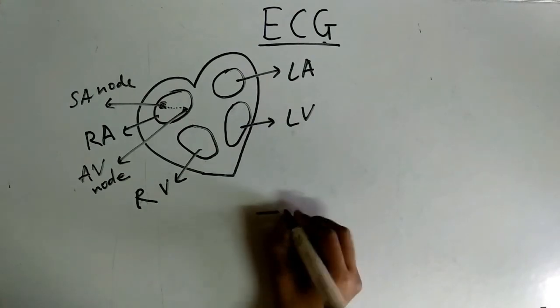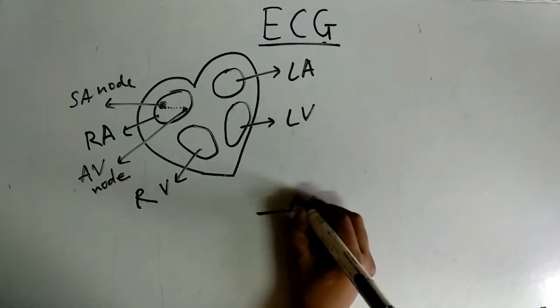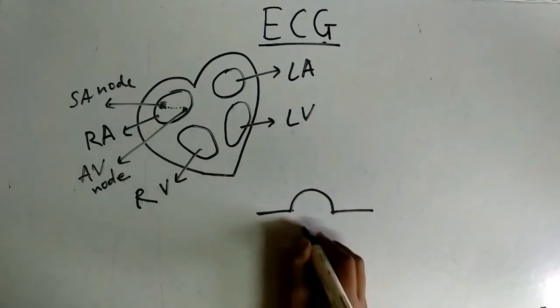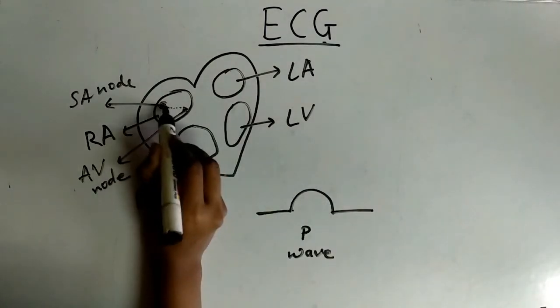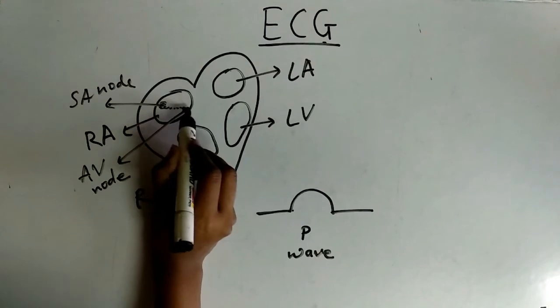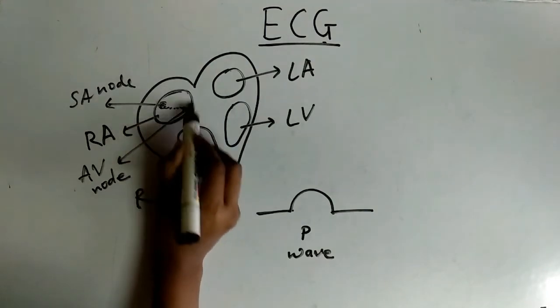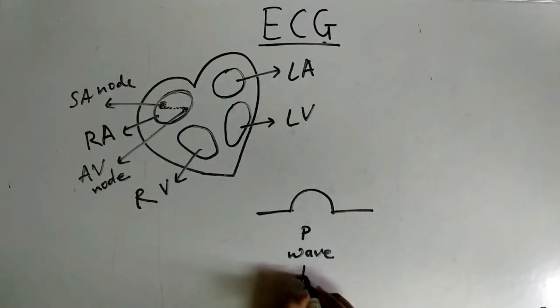When the signals are generated, we get a P wave. This P wave is generated by the transmission of signals from SA node to AV node. And this atria, right atria gets contracted. So in P wave, atrium gets contracted.